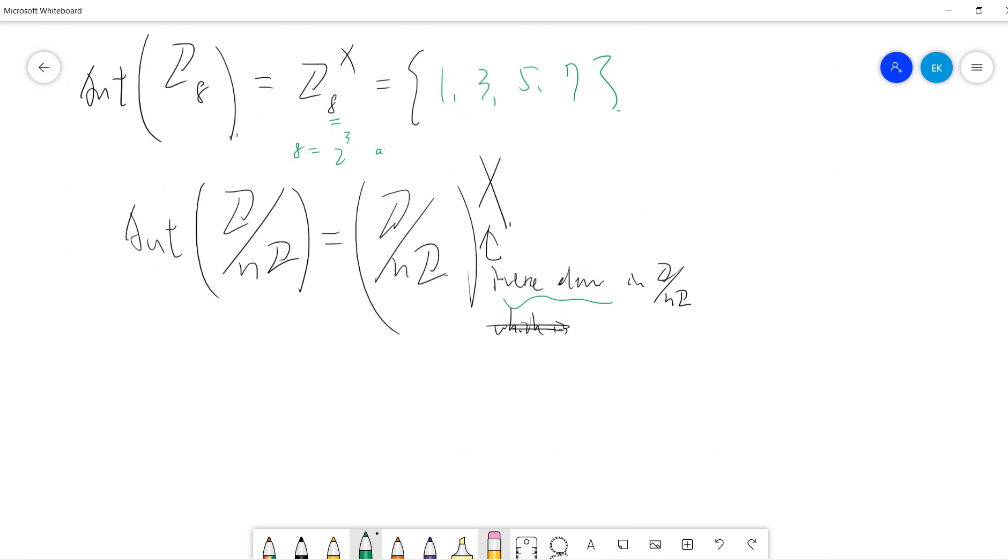Okay, so this tells you that the order of the Z8, the automorphism of Z8, is just 4, right? So we know that there are 2 possible groups of order 4.